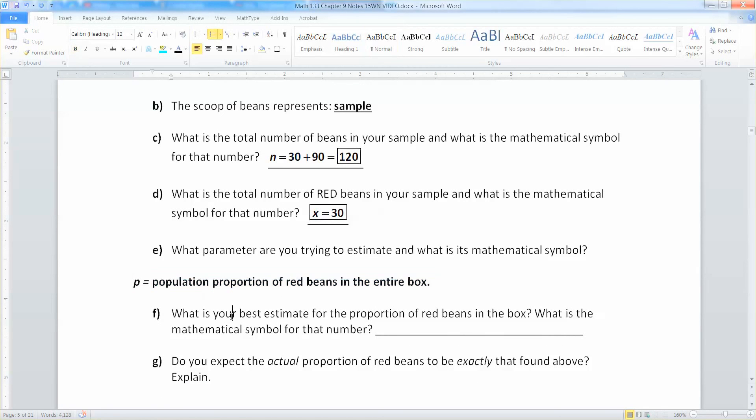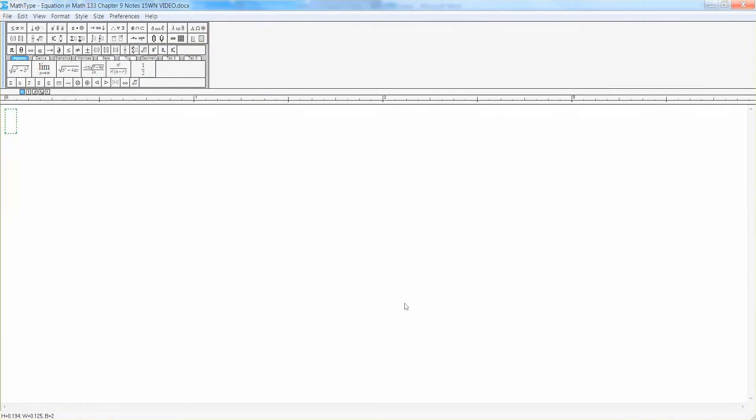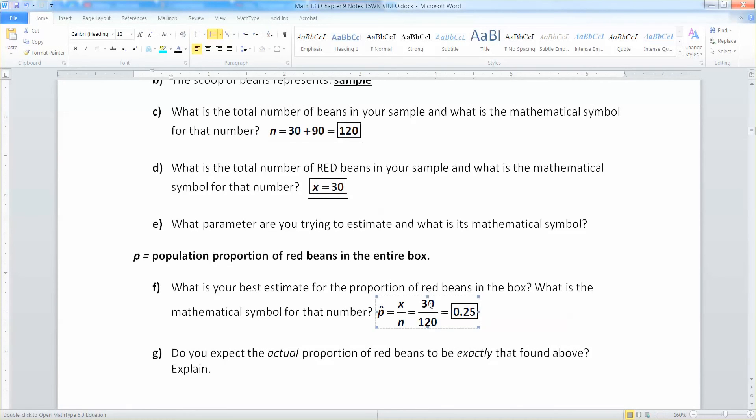And of course remember it's a metaphor for a sample of a population. So you're thinking what proportion of people are, I don't know, going to come down with anemia, what proportion of people are going to have breast cancer, what proportion of, et cetera, et cetera, et cetera. What is your best estimate for what the proportion of red beans in the box is? Well you'd have to use your scoop. And your scoop tells you that it is P hat, which is X over N, which we know is 30 over 120, which is 0.25. So 0.25 is our P hat. That's our best guess. It's called the point estimate. The single best guess.